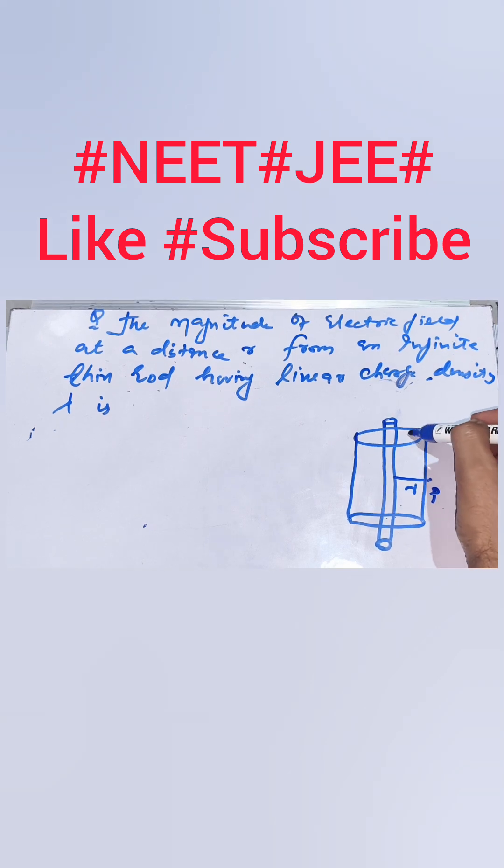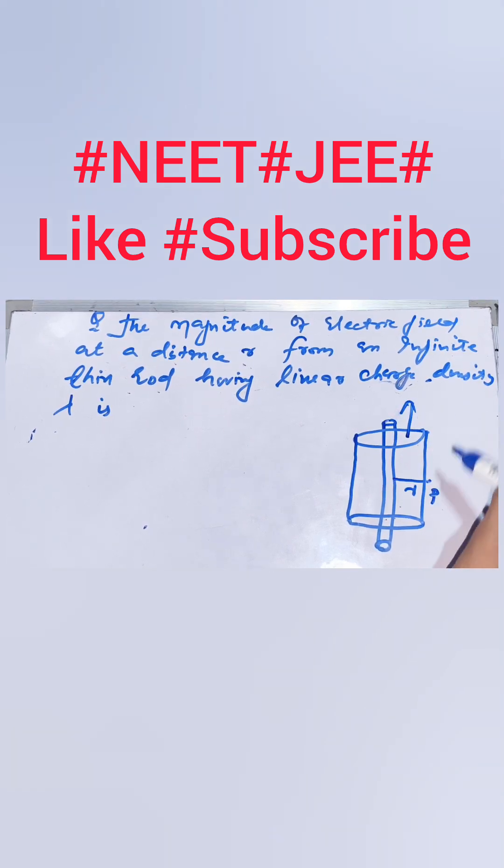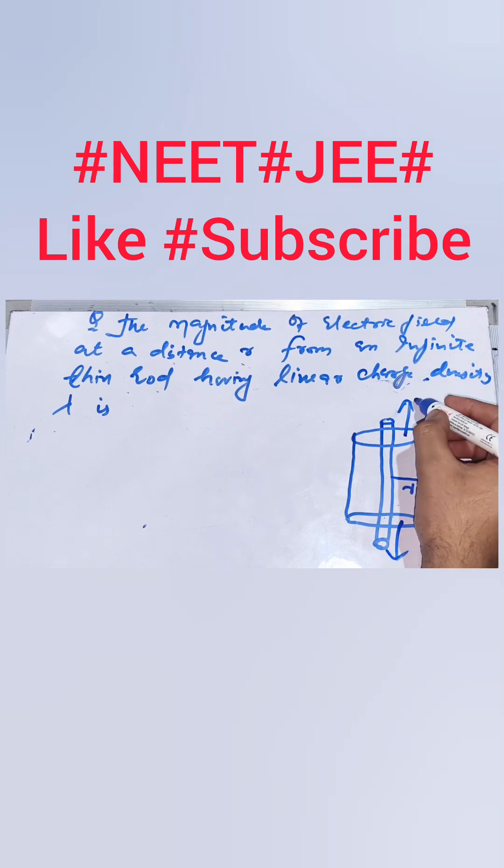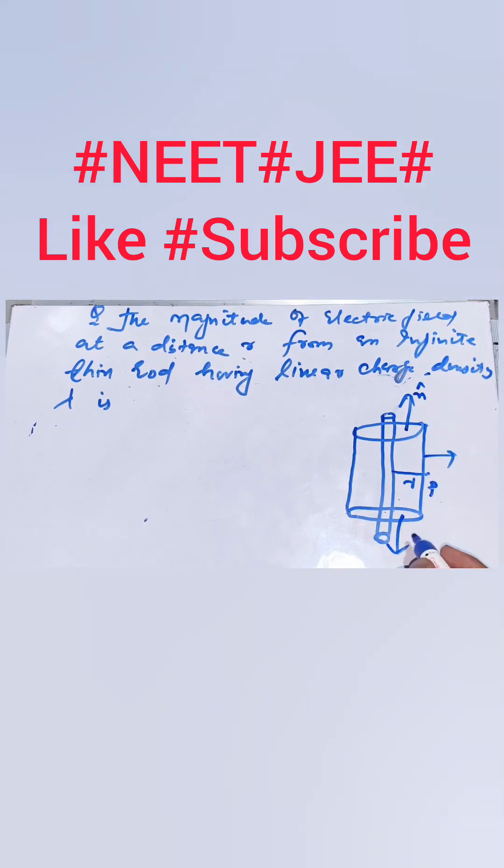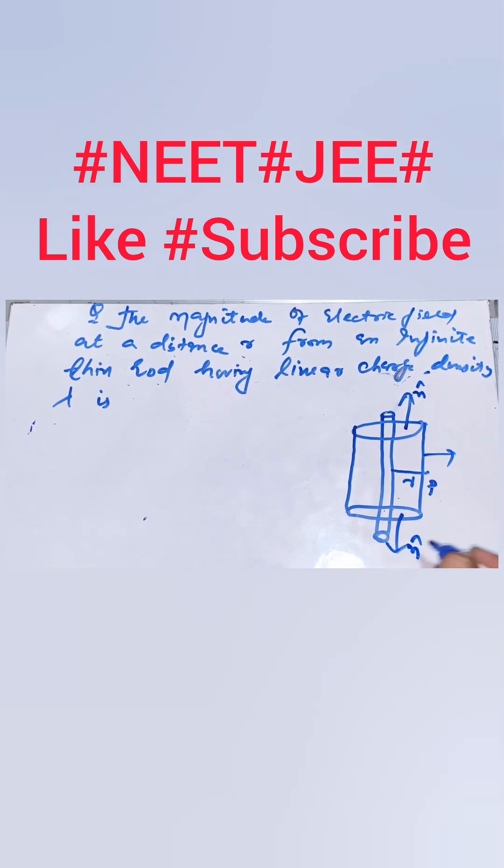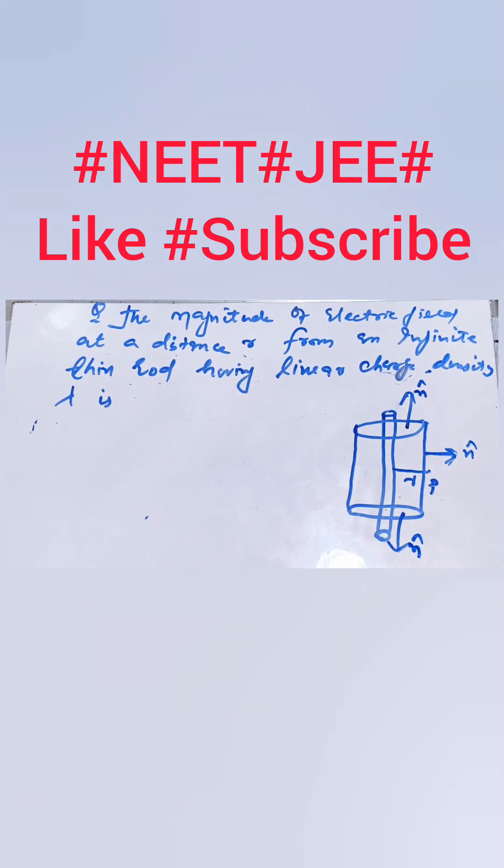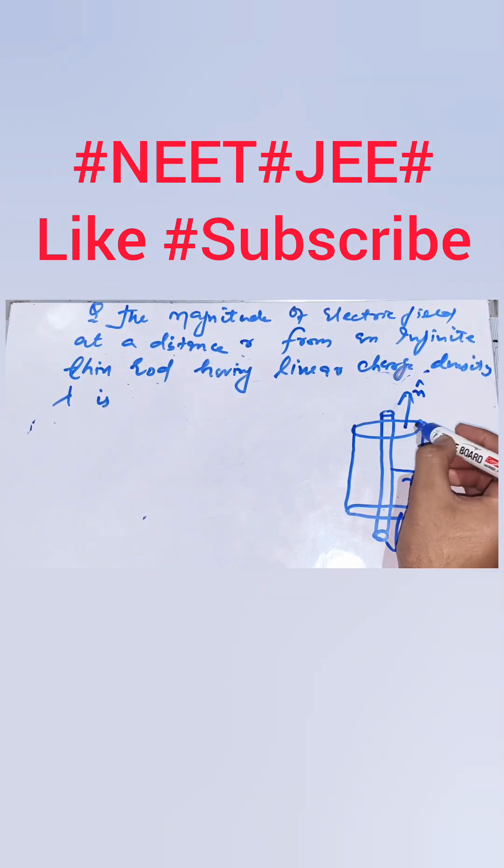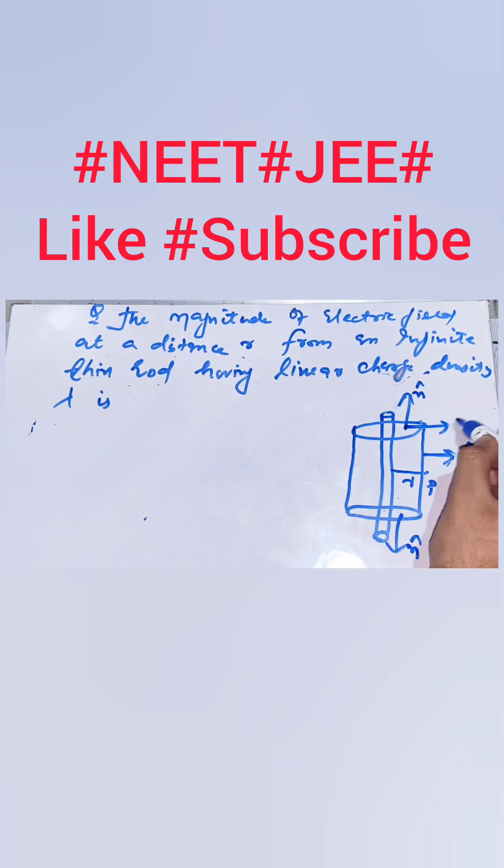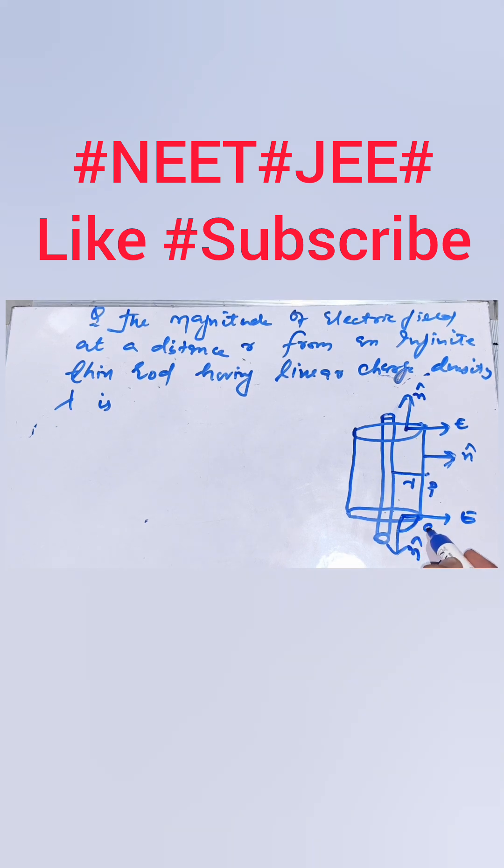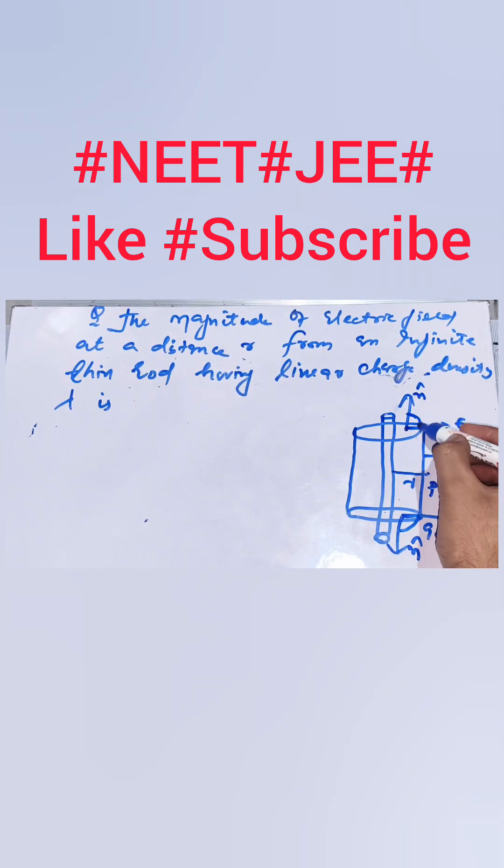Here in the cylindrical Gaussian surface we have two ends and one curved surface. If I draw the area vector that will be n cap, area vector will be n cap vertically downwards and this will be the area vector at this point. The electric field along the ends will be along this direction. So the angle between area vector and electric field is 90 degrees here and also 90 here.